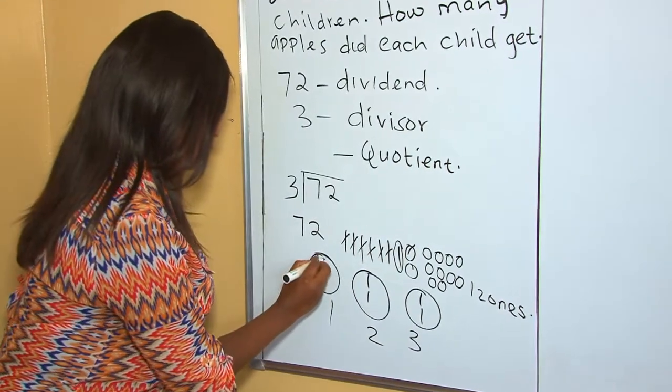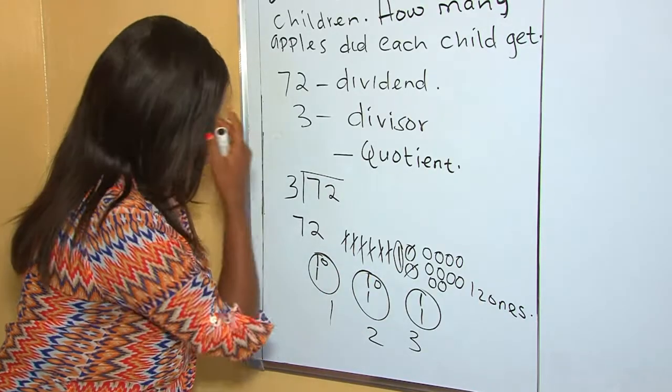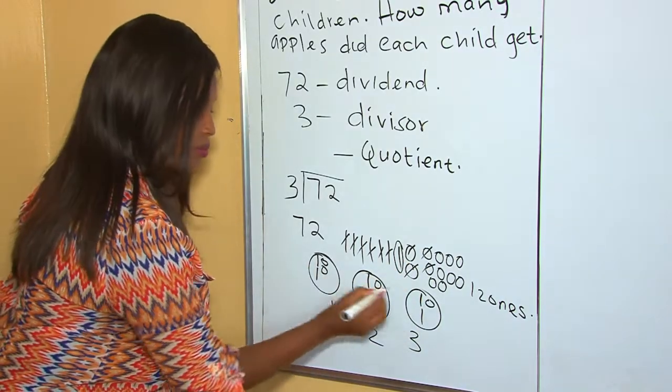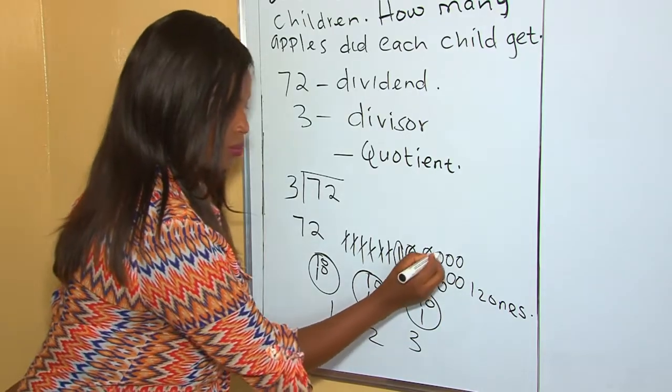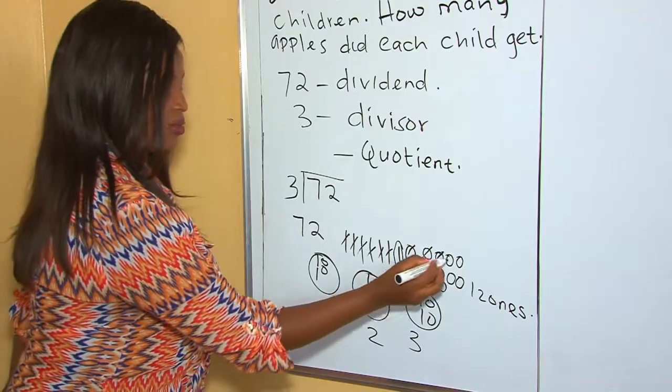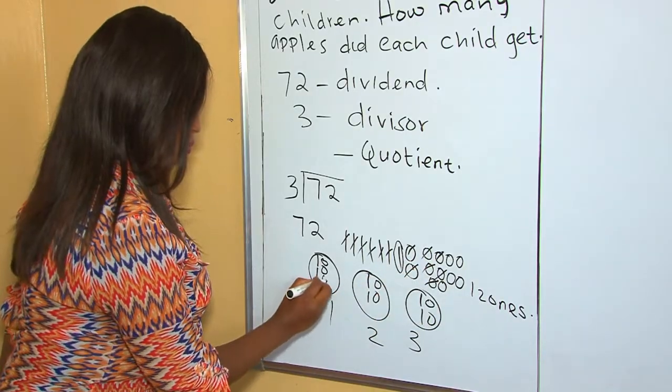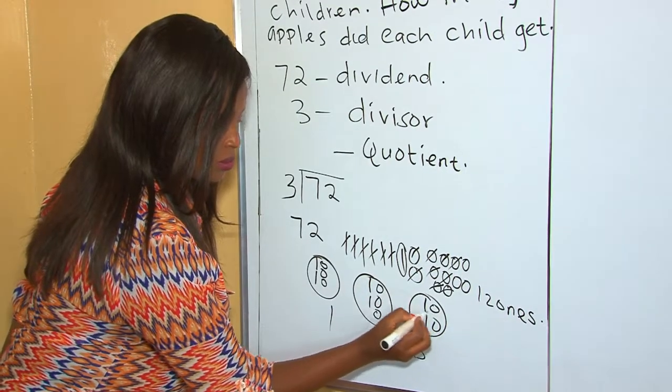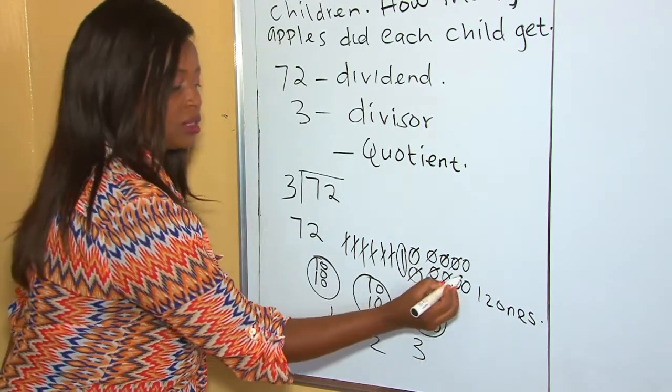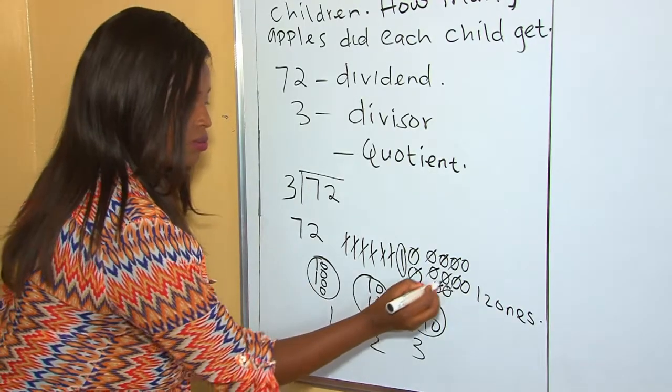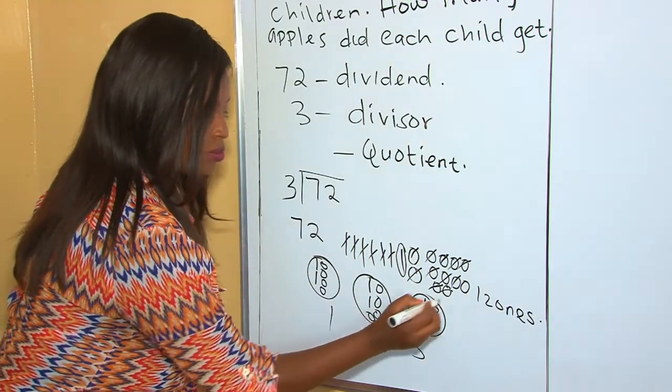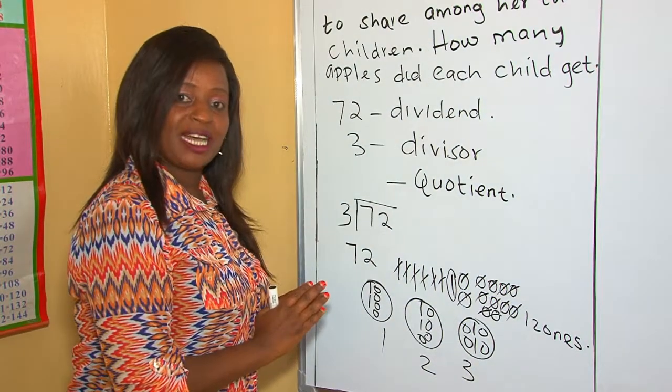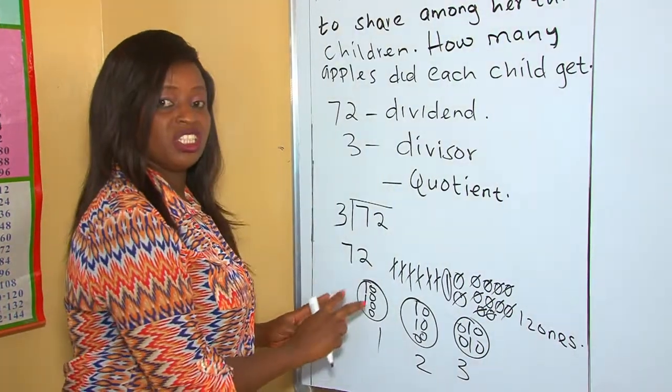Now we share these twelve ones with our children here. So the first one goes with the first child, to the second child. Now we pick again, and then the other one. Three, three, three, four, four ones are being shared.